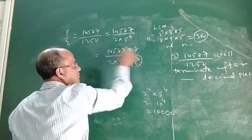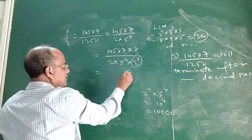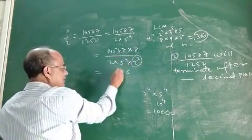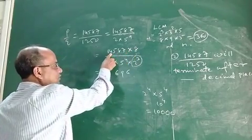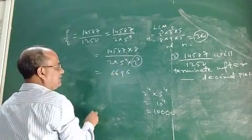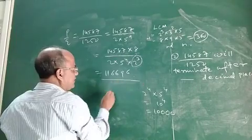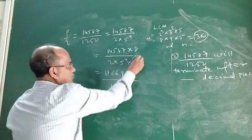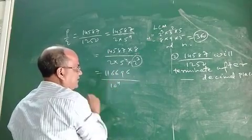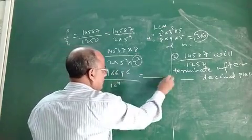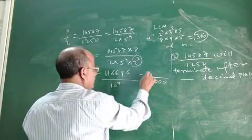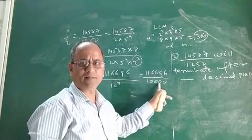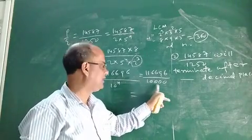So the numerator becomes 14587 into 8. Computing: 7 times 8 is 56, 8 times 8 is 64 plus 5 is 69, 5 times 8 is 40 plus 6 is 46 carry 4, 4 times 8 is 32 plus 4 is 36 carry 3, 1 times 8 is 8 plus 3 is 11. The result is 116696. The denominator is 10 to the power 4, which is 10,000. The denominator contains 4 zeros after 1.